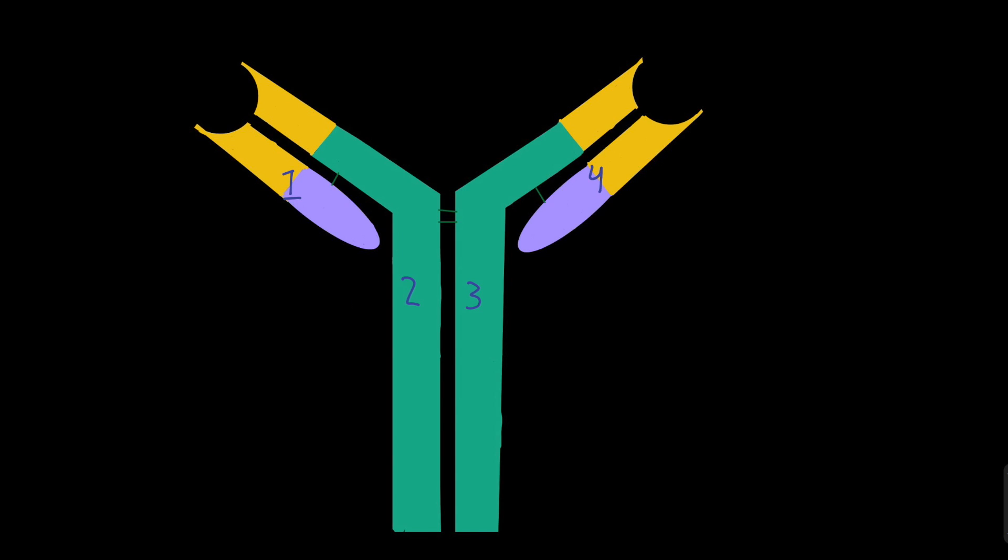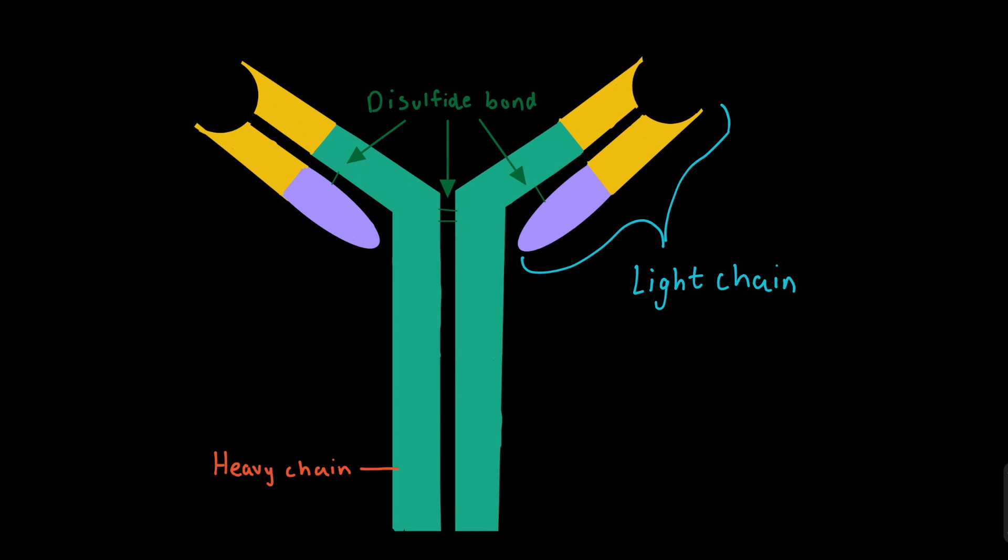Let's look at the anatomy of an antibody. The antibody has four polypeptides, two which are known as the heavy chain and the other two are known as the light chain. Both chains are held together by a disulfide bond.